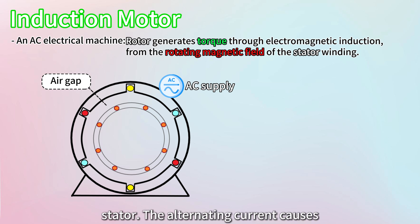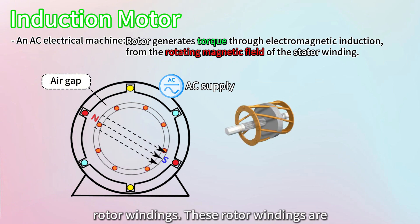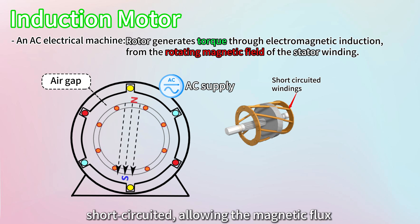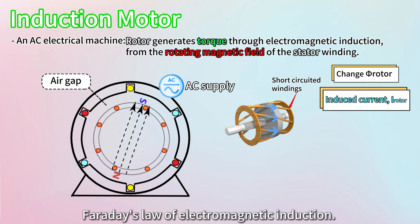The alternating current causes the stator to generate a rotating magnetic flux that sweeps across the rotor windings. These rotor windings are short-circuited, allowing the magnetic flux to induce a current in them, thanks to Faraday's law of electromagnetic induction.